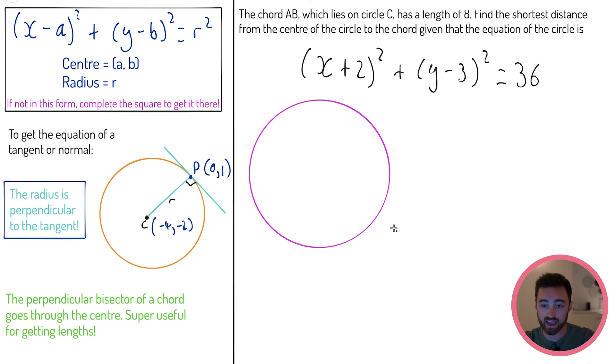So the chord AB, which lies on circle C, has a length of 8. Here's a circle with chord AB. We also have the center of the circle. We want the shortest distance from the center of the circle to the chord. If I ever want the shortest distance, it's going to be the perpendicular bisector. So the shortest distance is the line perpendicular to it. This is what I want - the length of this red line. But the perpendicular bisector goes through the center.